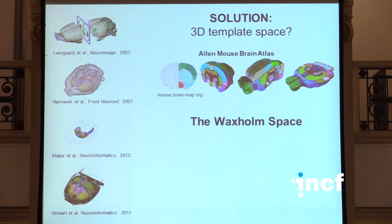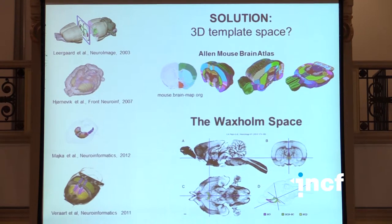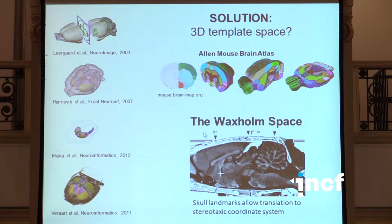The INCF Atlasing Task Force also defined a standard reference space for the mouse and rat brain — the voxel space — which is based on internal landmarks that can be found in isolated sections where the skull has been removed. Interestingly, when you look at available MRI voxel templates, it is possible to identify skull landmarks in the MRI images, which allows you to have the stereotaxic coordinate system together with the voxel space coordinate system, and it is possible to translate between them. Very useful.